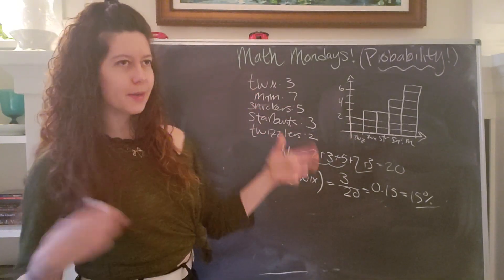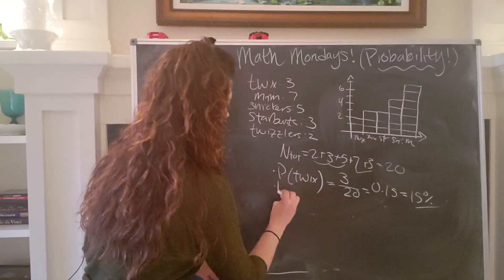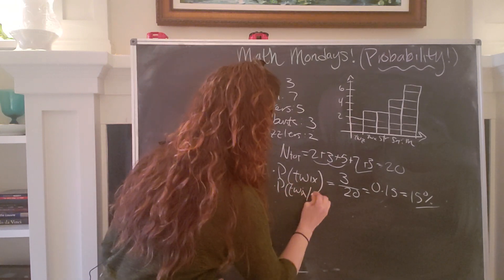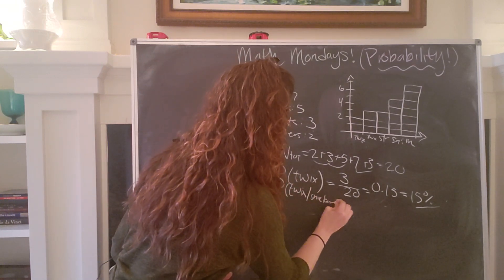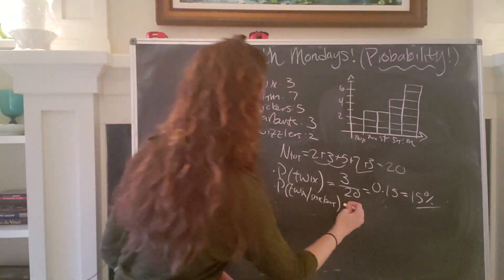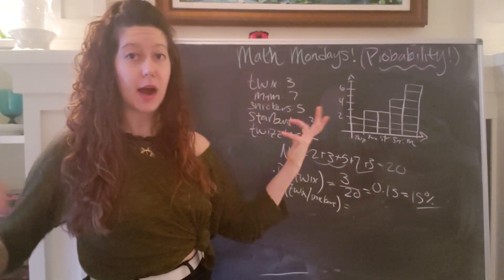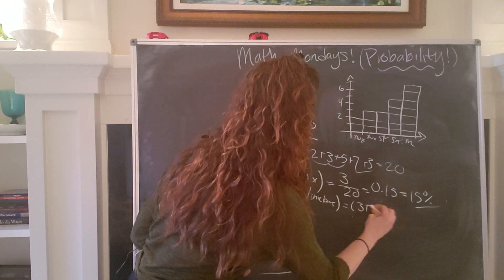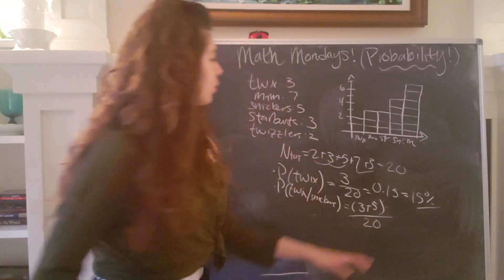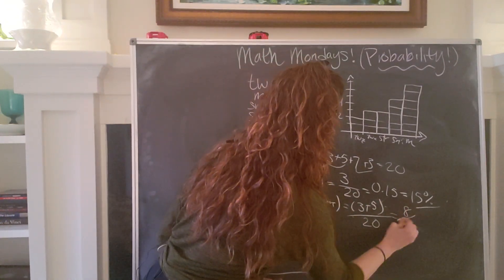But let's say I'm like, I'm kind of just feeling, you know, chocolate with a little bit of something. So maybe I want the probability of pulling out a Twix or a Snickers. So in this case, I would add up the two probabilities. So instead of just three, I also have five Snickers that I might get. So we add up three plus five, I'm going to try and write straight maybe. And then we divide that by the total number of possibilities.